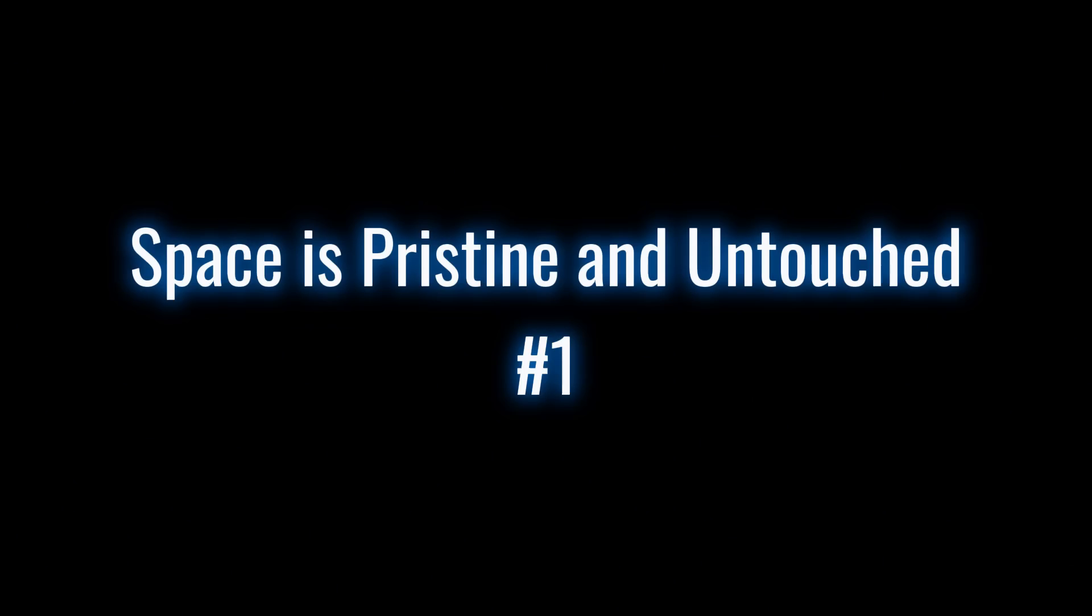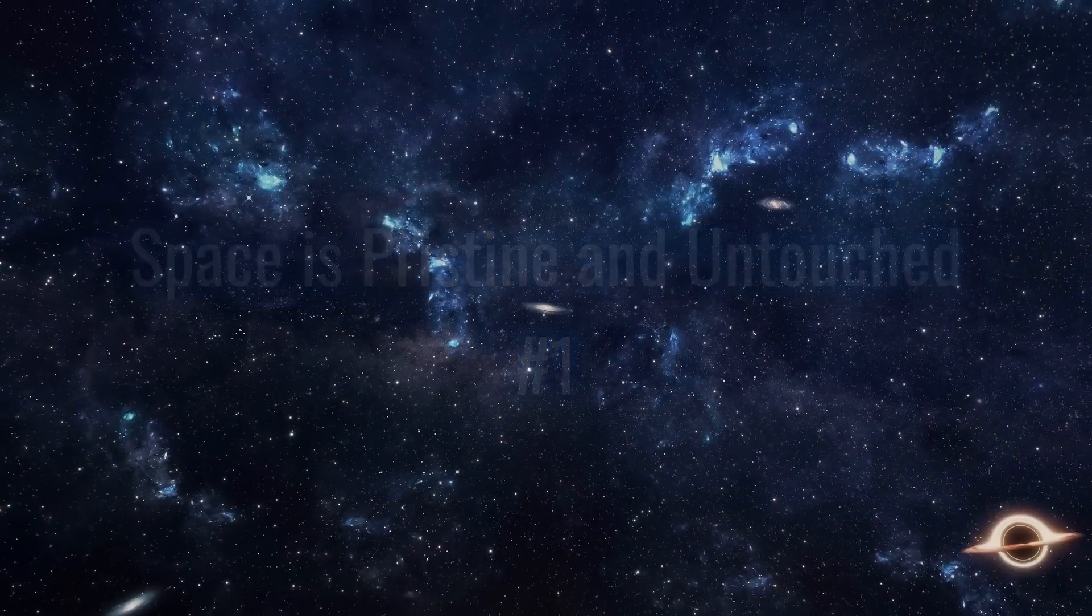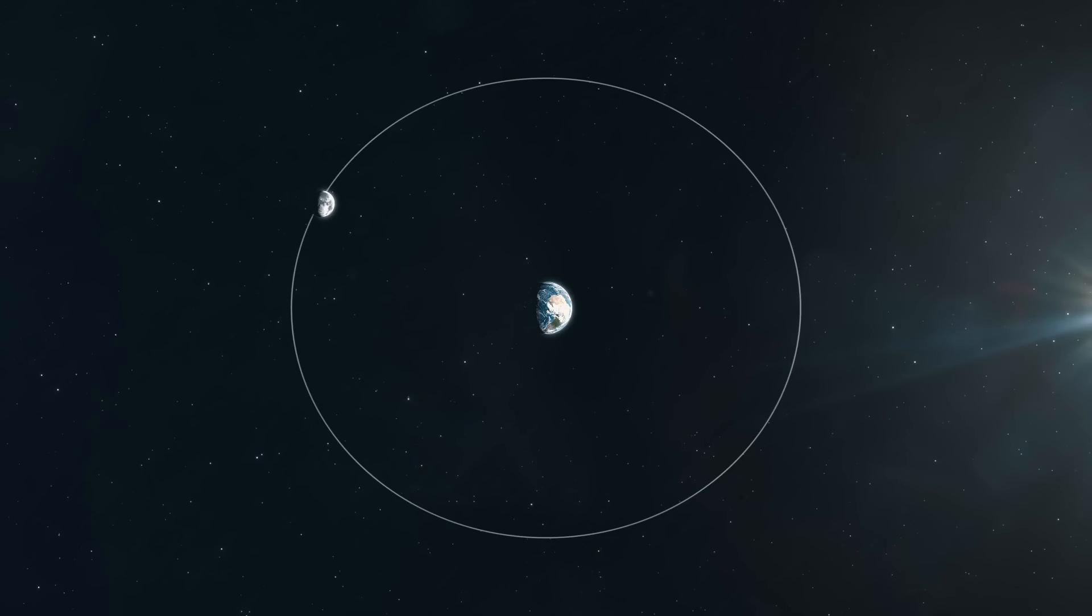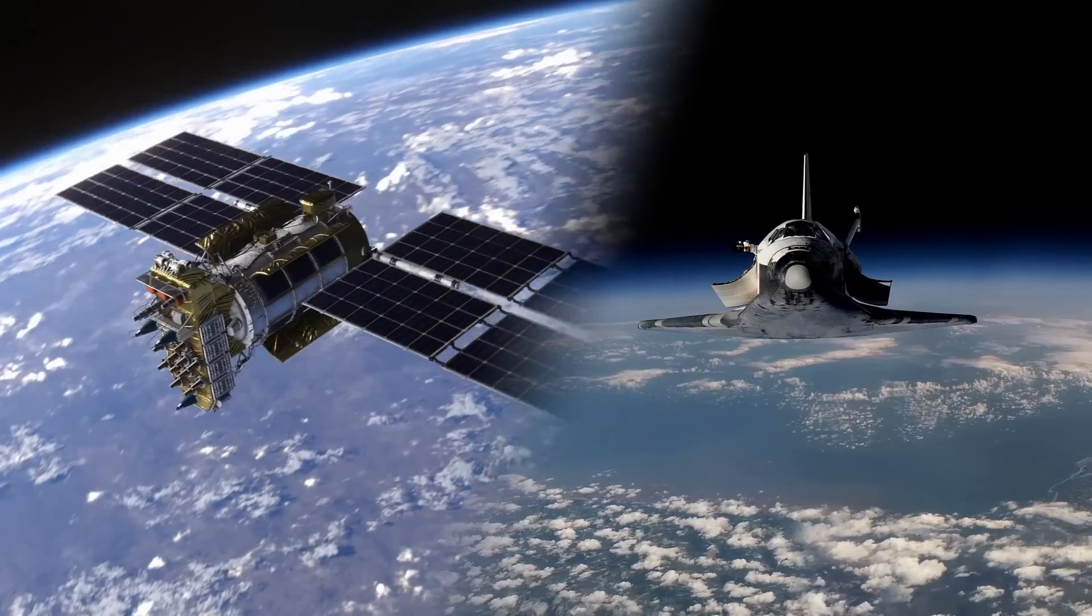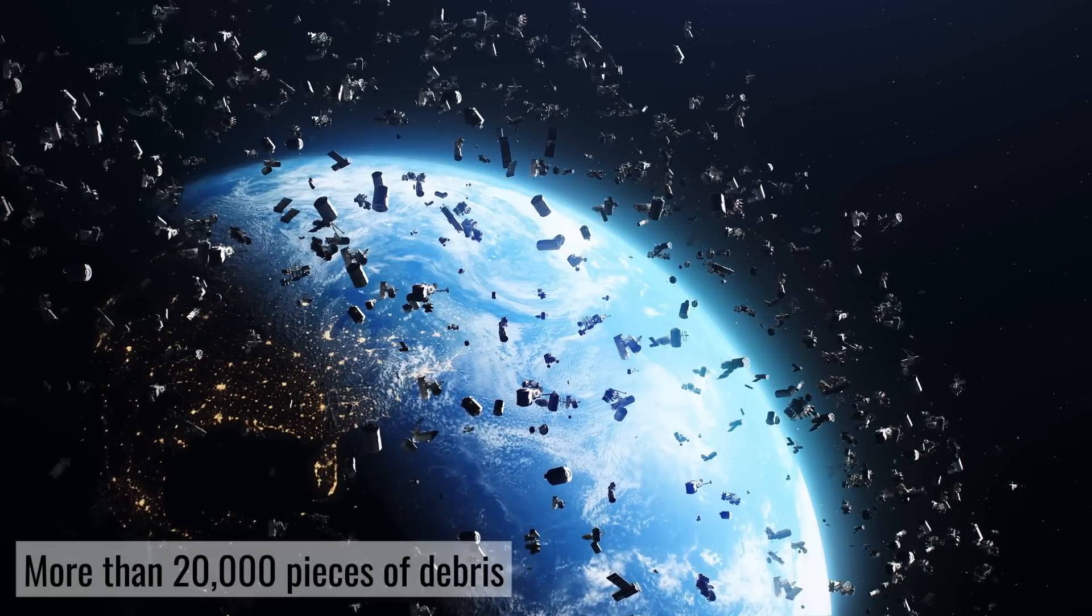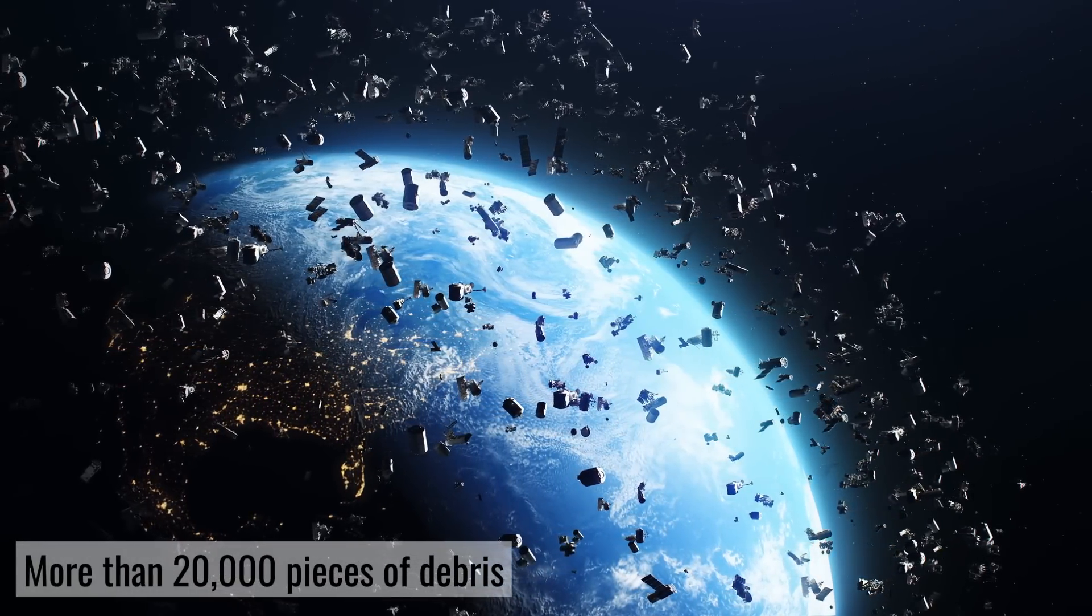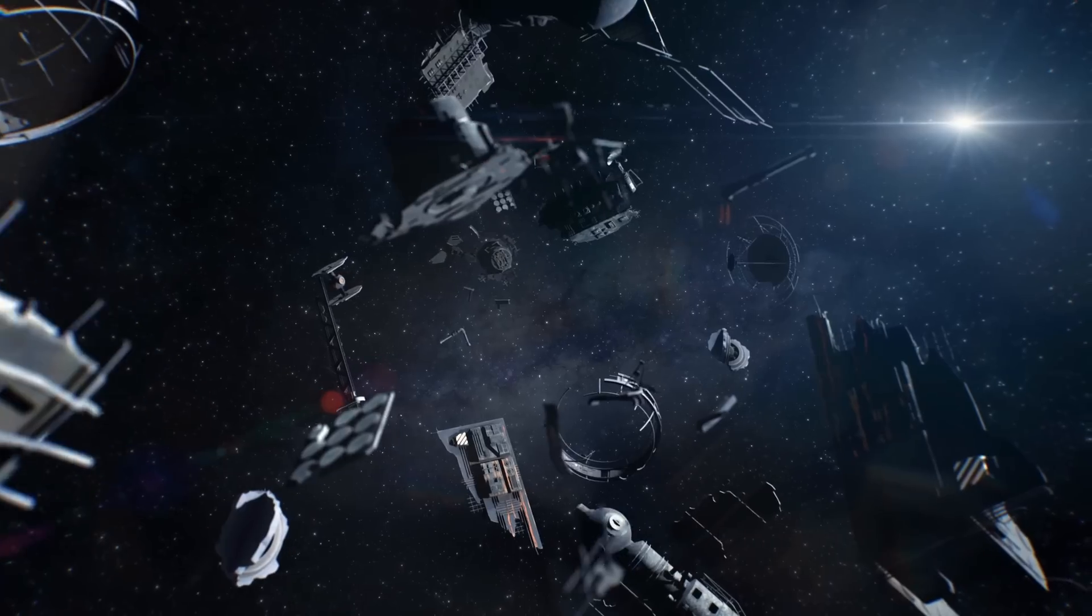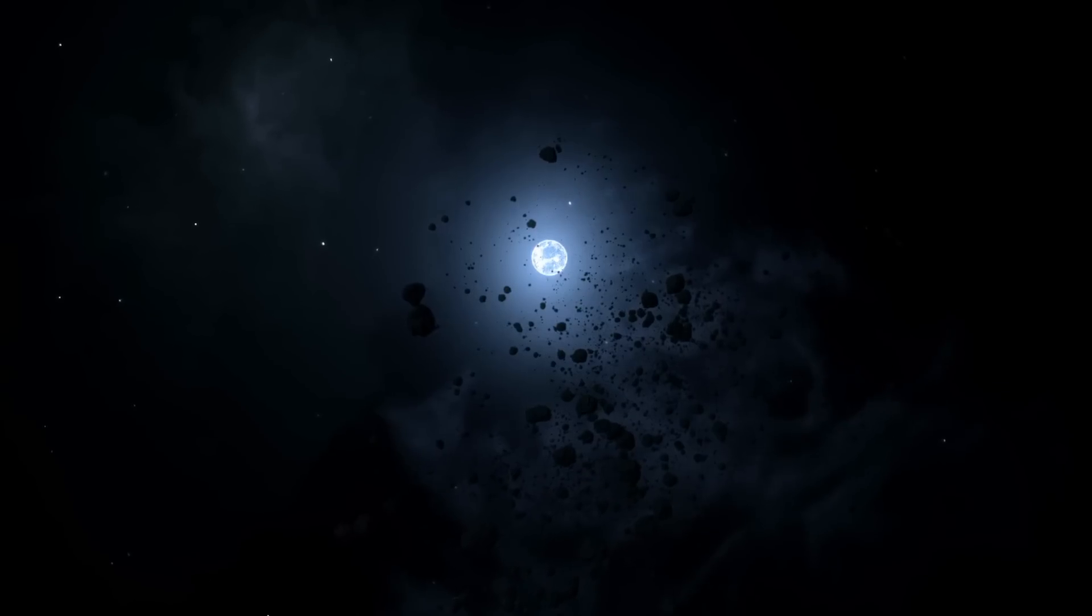1. Space is pristine and untouched. Think space is a clean wilderness? Wrong! We've been turning low Earth orbit into a cosmic junkyard. From dead satellites to rocket fragments, there are more than 20,000 pieces of debris zipping around our planet right now. Future space missions? Yeah, they're basically playing dodgeball with garbage.